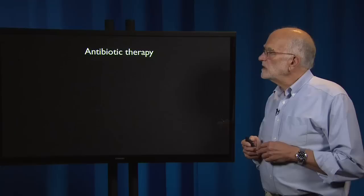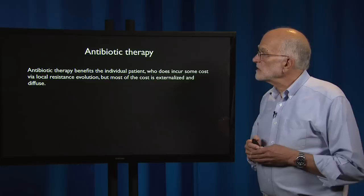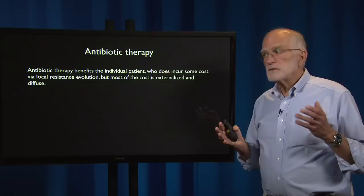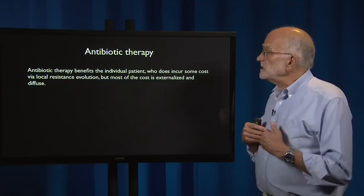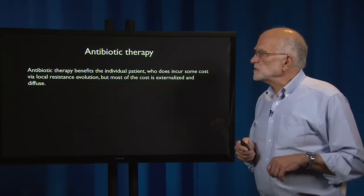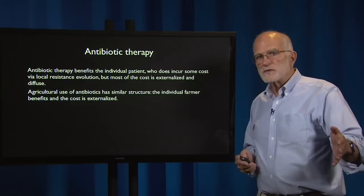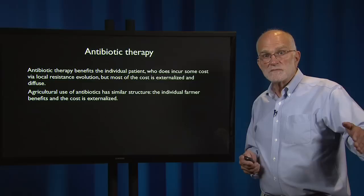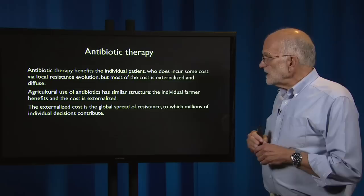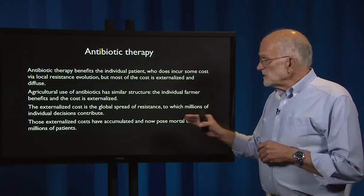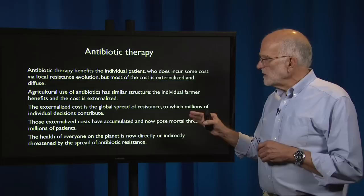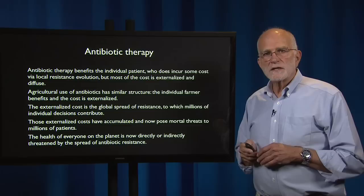Another place where the conflict between individual interest and group interest is striking concerns antibiotic therapy. Antibiotic therapy benefits the individual patient, who does incur some cost because of local resistance evolution — that means in that own patient's body. But most of the cost is externalized and diffuse; it's borne by the population as a whole. Agricultural use of antibiotics has a similar logical structure: the individual farmer benefits and the cost of resistance is externalized — that's not something the farmer usually sees himself. The externalized cost is the global spread of resistance, and that is something to which millions of individual decisions have contributed. Those externalized costs have accumulated and they now pose mortal threats to millions of patients. The health of everyone on the planet is now directly or indirectly threatened by the spread of antibiotic resistance.